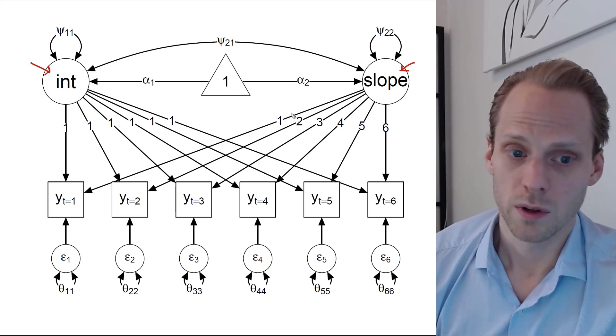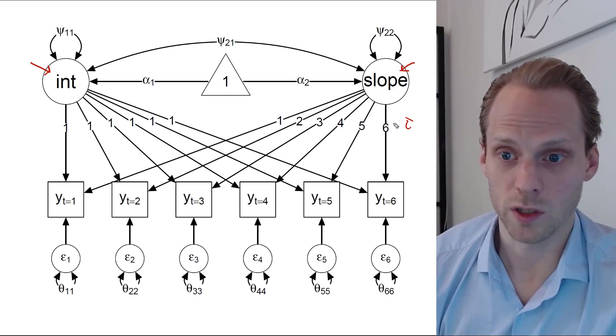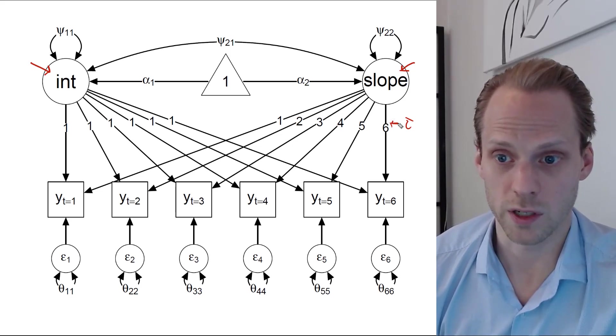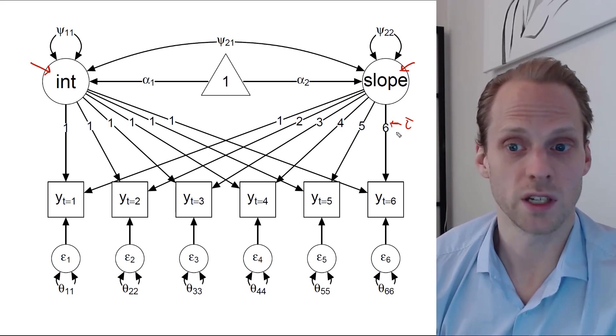For the slope, the measurement has t, t is time, times the slope. So we can just plug t in on the factor loadings and constrain them to certain values. And what you typically see is one, two, three, four, five, six, for example.